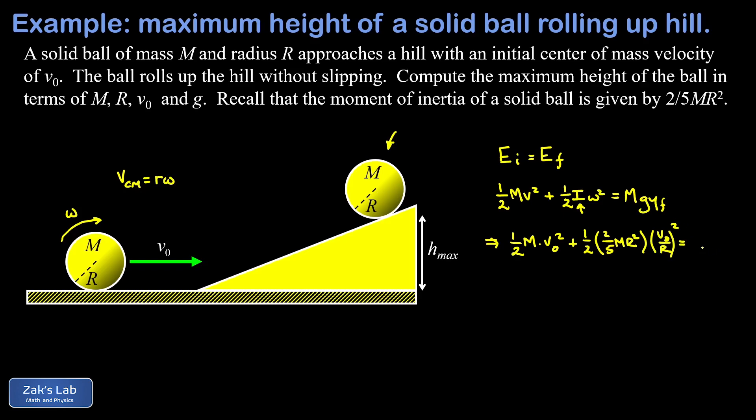Finally I have my potential energy term, where my final y value, we had a name for that, that was h max, and that's what we're trying to solve for. So things start to clean up a little bit. These two factors of R are going to cancel out, and here's a two that's going to cancel out. And so on the left hand side I have this term with a one half M v naught squared,